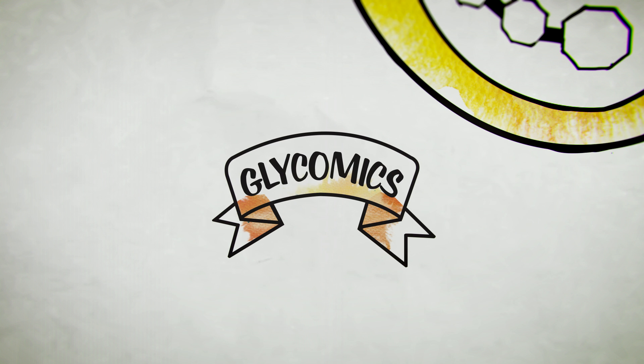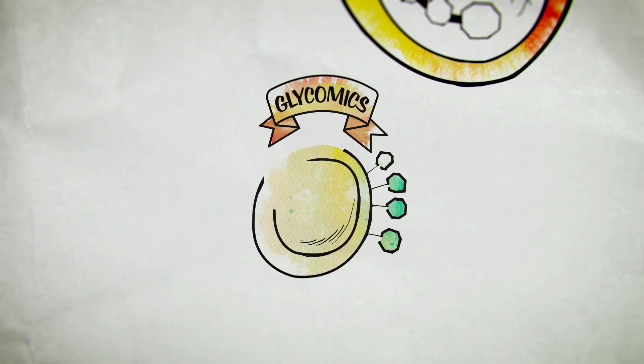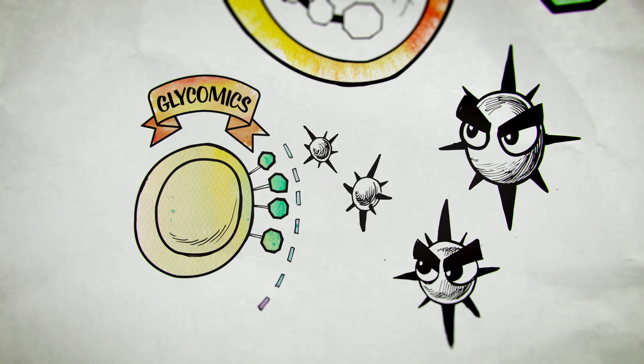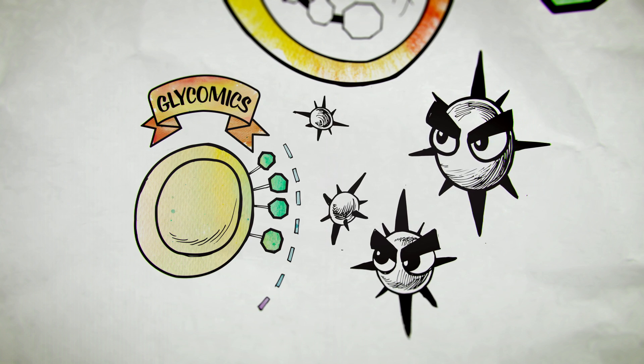Glycomics is the study of these carbohydrate chains. In the case of viruses or bacteria, for example, if scientists can stop them from latching onto the glycans of our cells, we can help prevent infections.